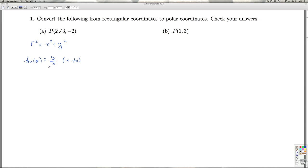That's assuming x isn't zero. If x is zero, then theta is either pi over 2 or 3 pi over 2 or some coterminal angle to that. So let's start off in part A.